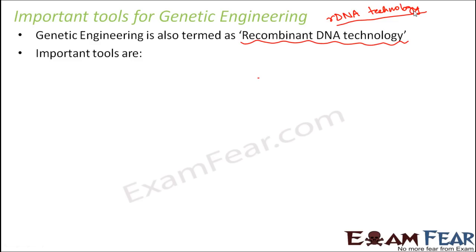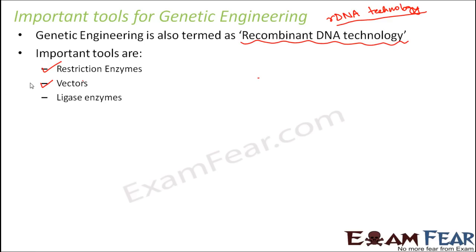Some of the important tools of genetic engineering are: restriction enzymes, which act as DNA scissors and help in cutting DNA; vectors, the plasmid DNA which acts as the vehicle DNA carrying the cut piece of DNA into the host organism; and ligase enzymes, which act as glue. Without ligase enzymes, the DNA pieces cut by restriction enzymes cannot be joined back. When a small cut piece of DNA is attached to the cut plasmid DNA to form recombinant DNA, that linking is done by the ligase enzymes.